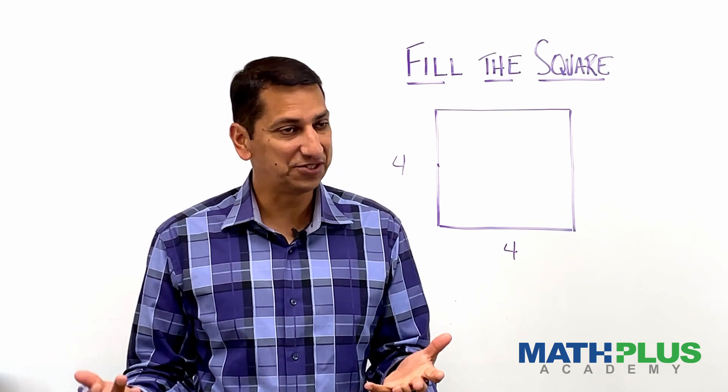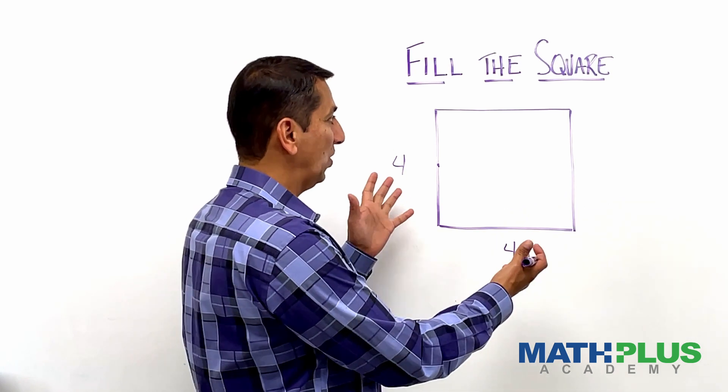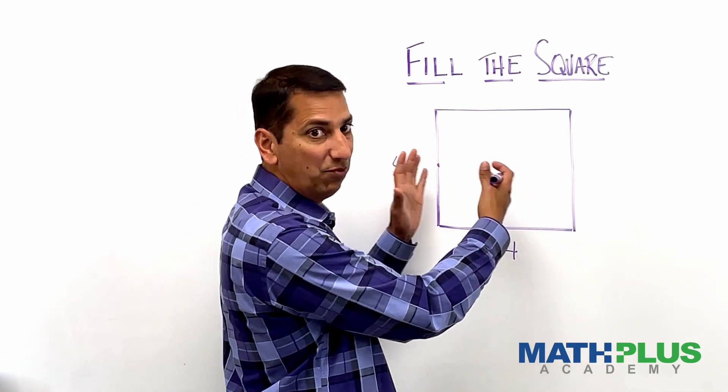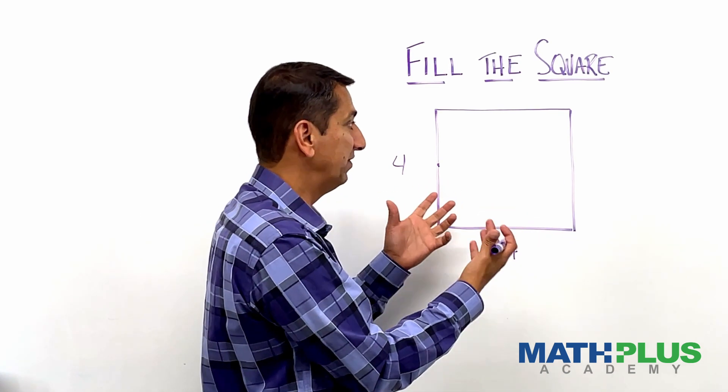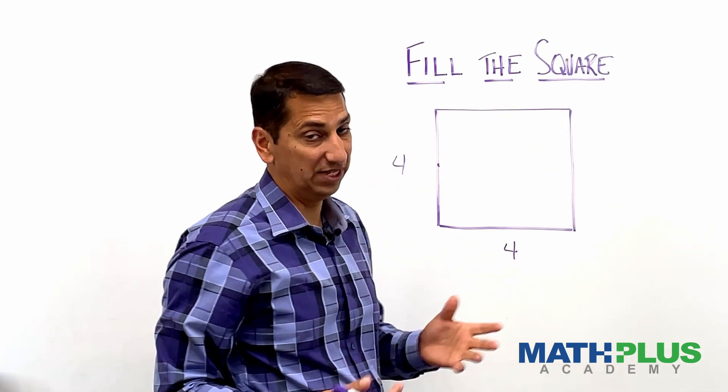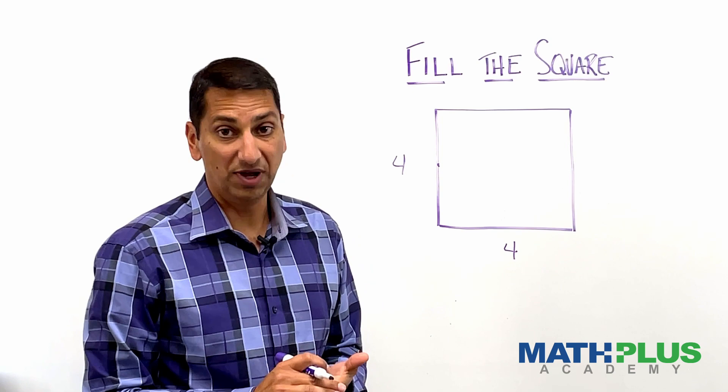I think you can convince yourself that there's no way to fill this with one rectangle. It's a square and our two by one rectangle, one of them will not cover this whole thing. So that's out. You can't do it with one, but you can do it with two.